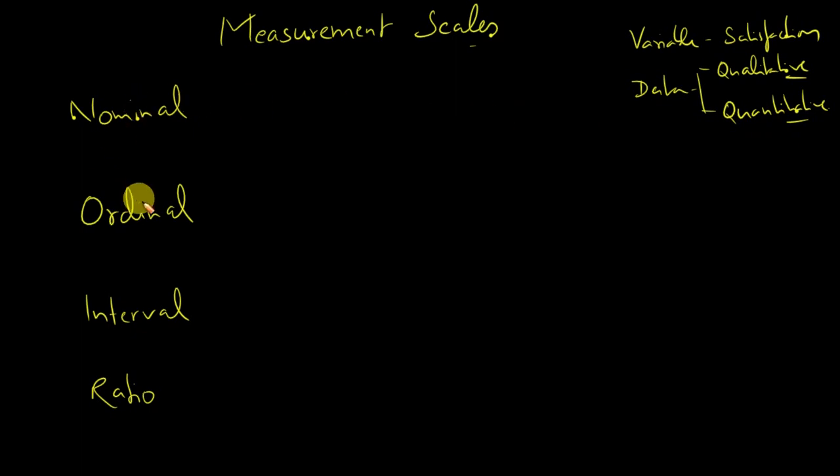So depending on whether the researcher wants qualitative or quantitative data, the researcher might use any one of these measurement scales. The first two, nominal and ordinal scales, are usually used to collect qualitative data. So we can also say nominal and ordinal scales are non-metric measurement scales. And interval and ratio are typically used to collect quantitative data. And we can say that interval and ratio scales are metric measurement scales. Now let's discuss them one by one.